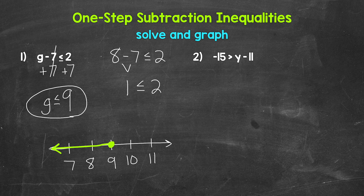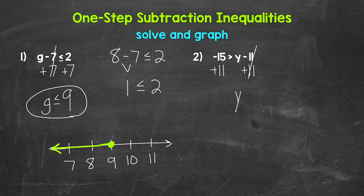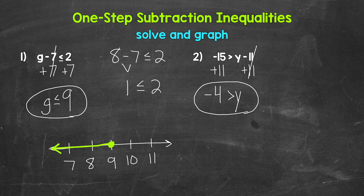Let's move on to number two, where we have negative fifteen is greater than y minus eleven. So we need to solve this — we need to isolate y. We are subtracting eleven, so we need the inverse operation of subtraction, which is addition. So add eleven to the right side, which means we also add eleven to the left side. These elevens cancel each other out, so y is now isolated. Negative fifteen plus eleven gives us negative four. So y is less than negative four.